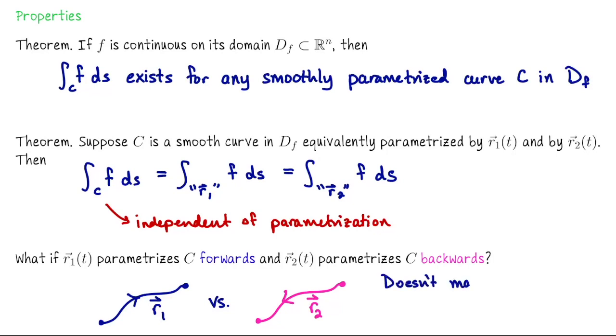It doesn't even matter whether you go forwards or backwards along the curve, you're going to get the same line integral. To test this you could take a function and compute its line integral over say the unit circle going clockwise versus counterclockwise and you should get the same result.